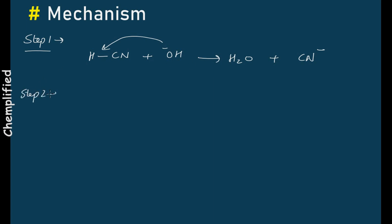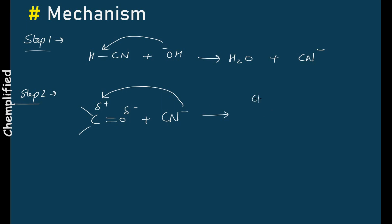Step 2: The carbonyl group is present. You now have the nucleophile cyanide ion. The delta positive carbon and delta negative oxygen are present. The negative nucleophile attacks the positive carbon, and you get an intermediate with O negative — because as soon as the nucleophile attacks the carbon, the pi-bonded electrons go towards the oxygen.